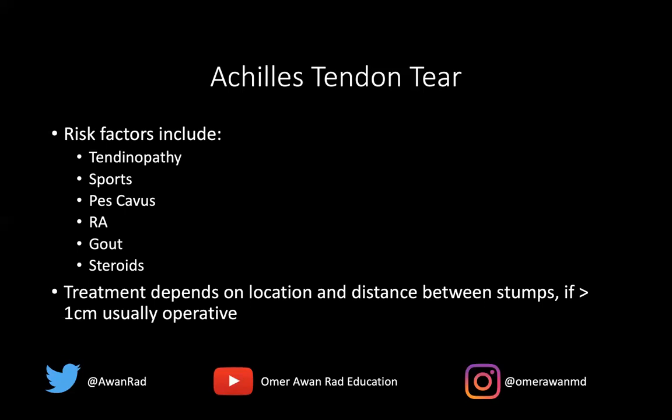Treatment depends on the location and the distance between the tendon stumps. If the tear occurs at the myotendinous junction, it is usually treated conservatively. If it is in the watershed area, there is a higher chance of operative repair. If the tendon stumps are more than one centimeter apart — diastatic — that usually indicates operative repair; if less than one centimeter apart, it can usually be treated conservatively. If the diastasis is more than three centimeters, a graft such as a flexor hallucis longus tendon graft is most commonly used. If the diastasis is between one and three centimeters, an end-to-end anastomotic suture of the tendon can often be performed.